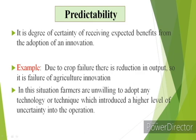The last attribute of innovation is predictability. It is the degree of certainty of receiving expected benefits from the adoption of an innovation. For example, farmers are unwilling to adopt any technology that introduces a higher level of uncertainty into their operations. Before adopting any new technology, farmers think over all the advantages and disadvantages of that particular innovation. Prediction is necessary before adopting an innovation — if it is a good innovation that gives good results, it will be more beneficial to farmers.